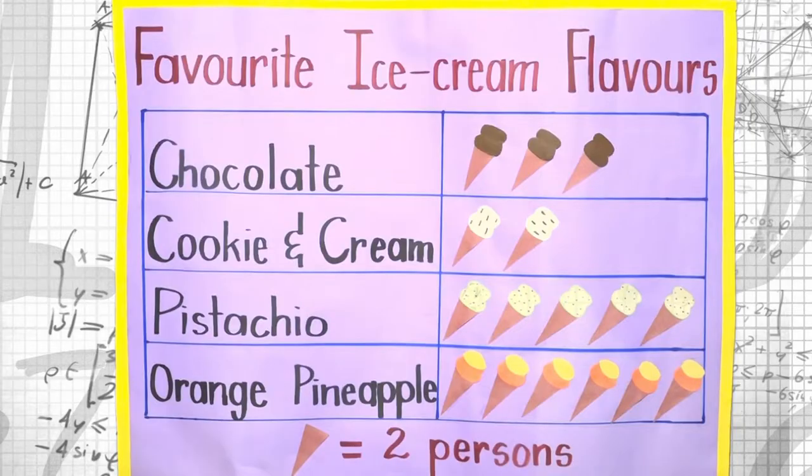Today we're going to assist Miss Brown as we create a pictograph using this information. We use pictures to represent our symbols, and our key tells us exactly what each symbol represents. In this case, we're going to be using one cone to represent two persons. Seeing that Miss Brown has six persons who enjoy chocolate ice cream, how many cones would we need? Three cones — correct! Each cone represents two persons.